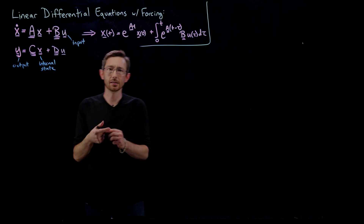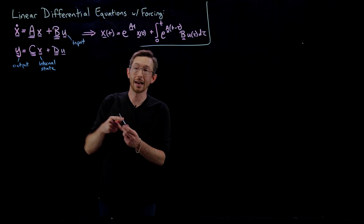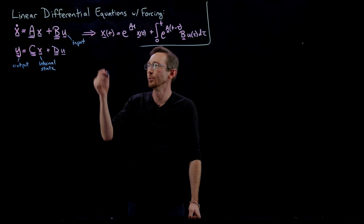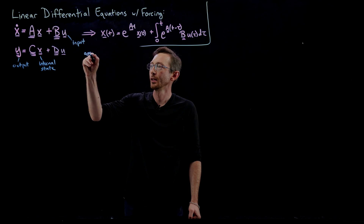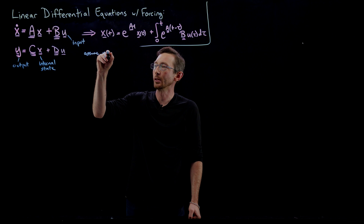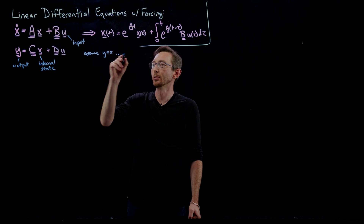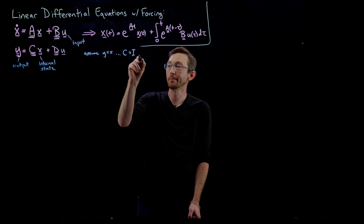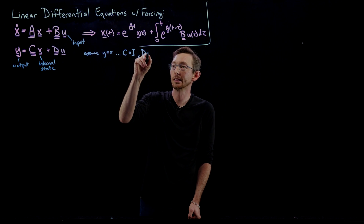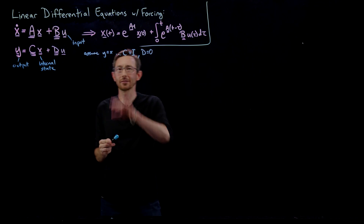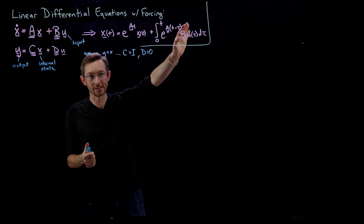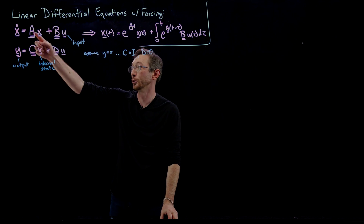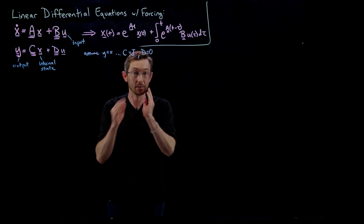For our purposes, we want to plot the full state x. So we are going to assume that y equals x, meaning C is going to equal the identity — the n-by-n identity — and D is going to equal zero. This doesn't have to be the case, but in the Python and MATLAB examples I'll choose C to be the identity because I want to plot the full state x when I compute things like the impulse response.